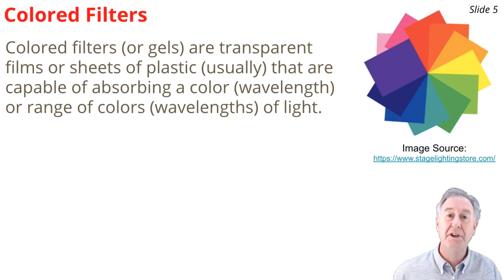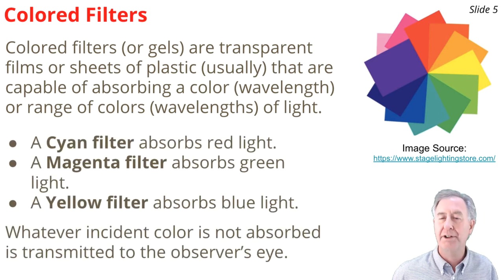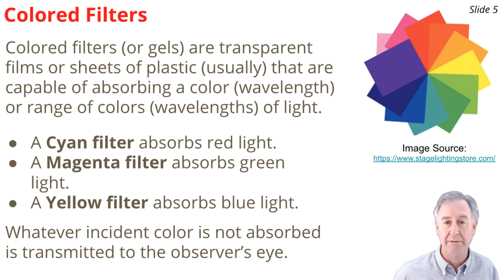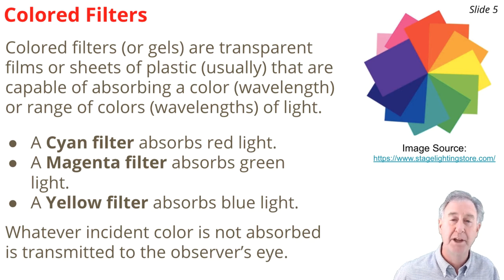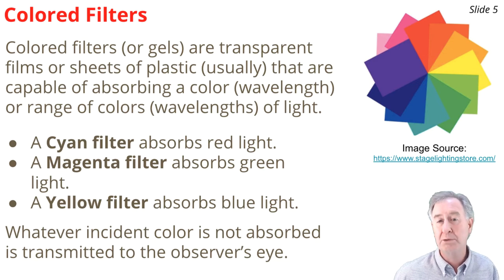In the photo, you see what are called colored filters or gels — transparent sheets of plastic that absorb a single wavelength or a range of wavelengths of light. If you have a cyan filter, that's a filter that absorbs red wavelengths of light. A magenta filter absorbs green wavelengths of light. And a yellow filter absorbs blue wavelengths of light. Whatever wavelengths are not absorbed by a filter get transmitted through to the observer's eye.